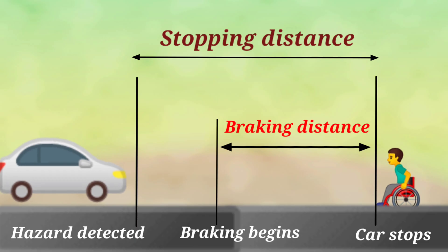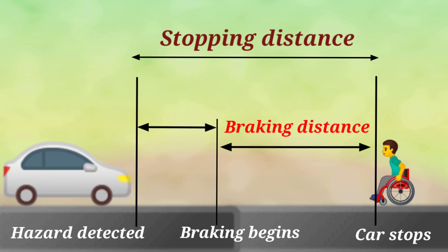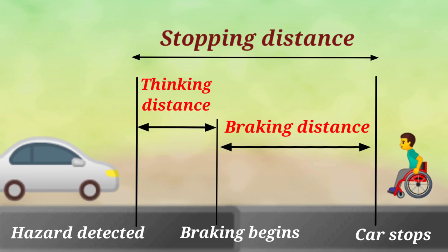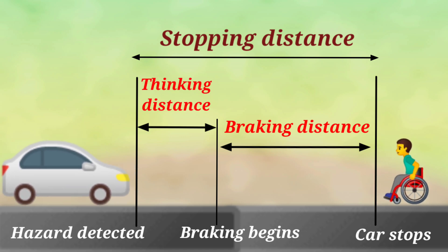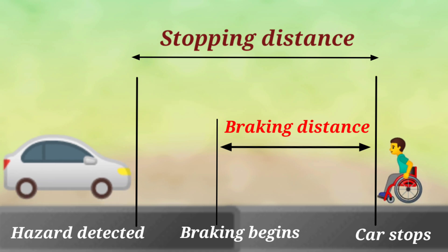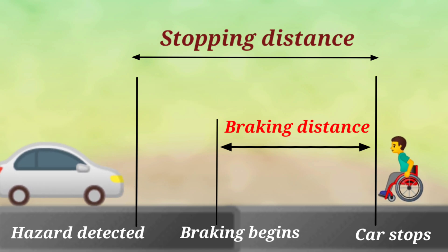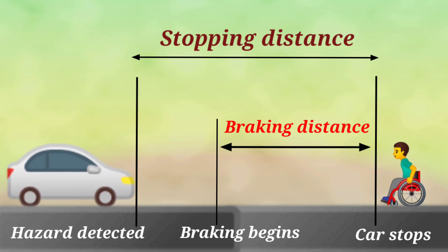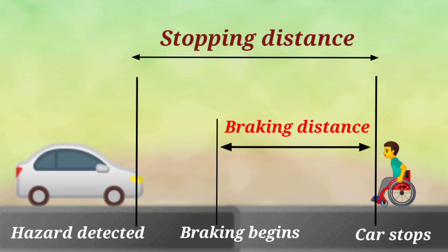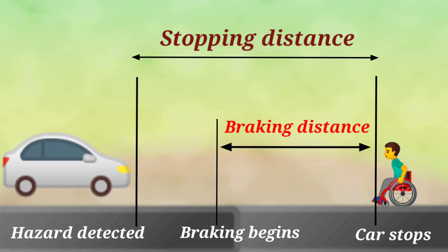For example, if you are traveling at 20 miles per hour then your thinking distance is approximately 20 feet. Likewise, if you are traveling at 40 miles per hour then your thinking distance is approximately 40 feet.